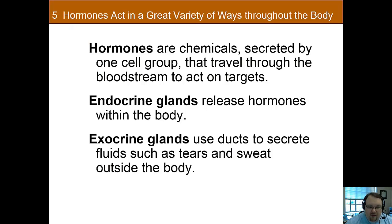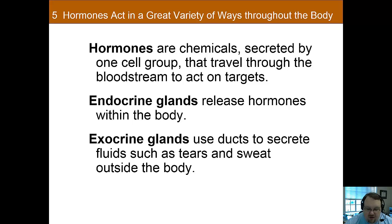Up until this point we've discussed how the nervous system communicates, but we haven't discussed how the rest of the body communicates with the brain. We've talked some about sensory neurons and motor neurons, but not a lot about how organs communicate with the brain. One of the primary mechanisms of communication throughout the body is using hormones.